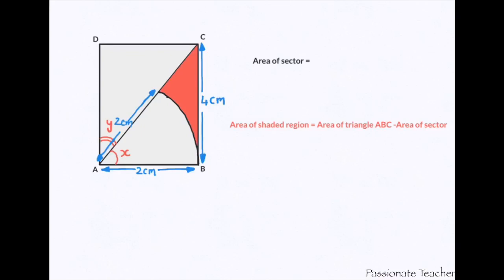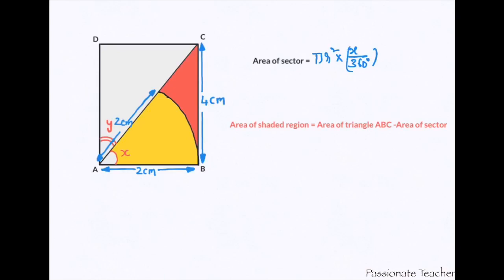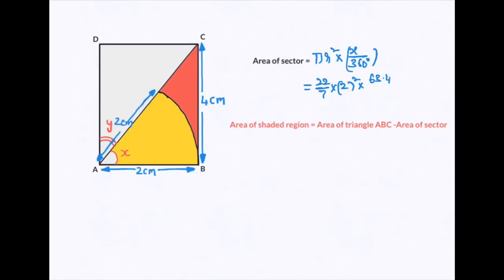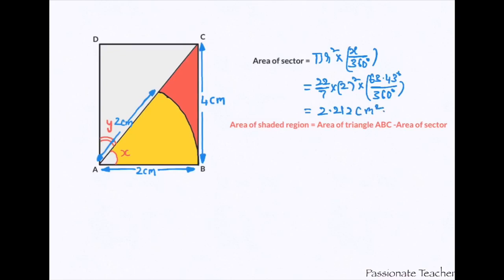Now the area of the sector is given as pi r² × x/360°. We know x equals 63.43 degrees, pi is 22/7, and r² is 2² = 4. So the sector area equals 22/7 × 4 × 63.43/360, which comes down to 2.212 cm².